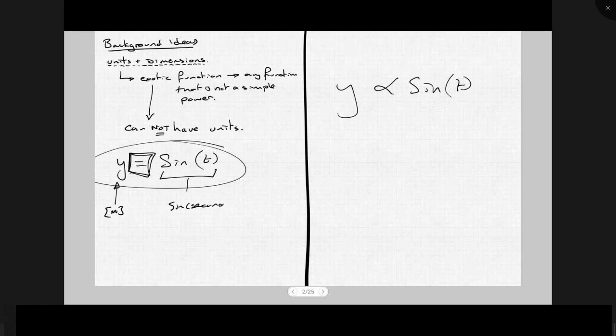Now, sine seconds doesn't make sense. In a physical universe like ours, there is no physical reality to the idea of having sine seconds. So this is why sine functions, cosine, etc., they must have no units. And it still wouldn't be acceptable because now I've got meters equals no units.